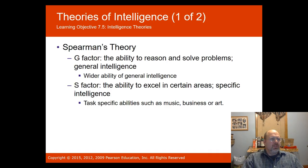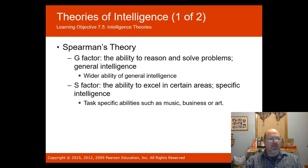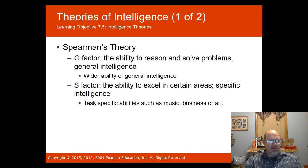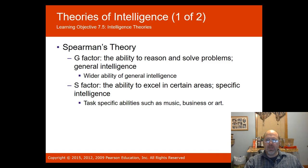One theory of intelligence is Spearman's theory. He talks about the G factor — general intelligence — which is the ability to reason and solve problems. The S factor refers to specific intelligence: the ability to excel in certain areas, such as music, business, or art.